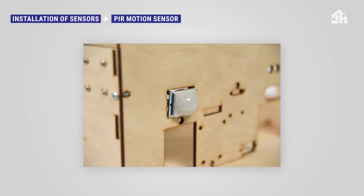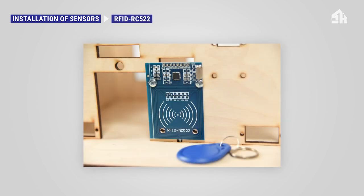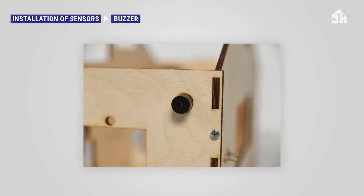Mount the PIR motion sensor through the top left and bottom right mounting holes using two bolts and two nuts. Mount the OLED display through the top left and bottom right mounting holes using two bolts and nuts. Mount the RFID sensor through the top left and bottom right mounting holes using two bolts and nuts. On the right side piece, mount the five volt buzzer by inserting it into the upper right corner slot with its pins on the inside of the house model. Friction will keep it in place.